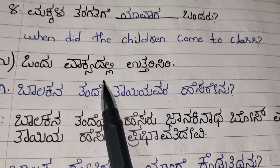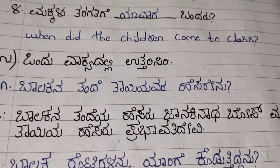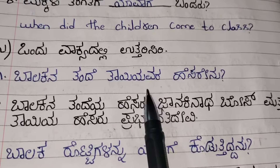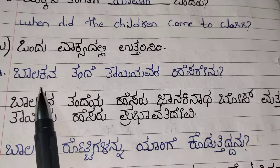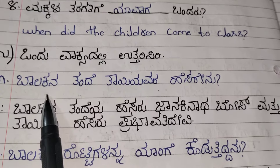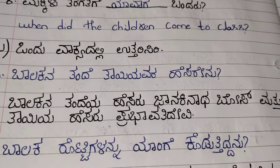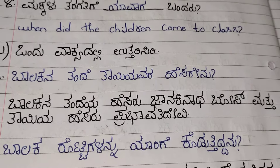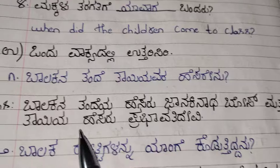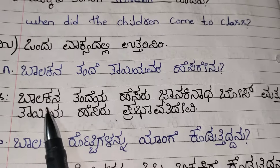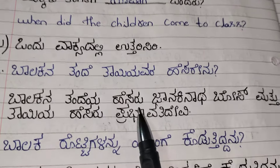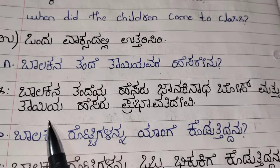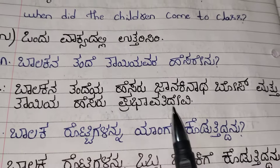Next one: Vandhuvaakya dalli uttarishiri. You need to answer these in one sentence. Balakana tandetai yavara hesarenu — you need to tell the boy's father and mother's name. Father's name was Janakinadbos and mother's name was Prabhavati Devi. The answer is: Balaka na tandeya hesaru Janakinadbos, matduu taeya hesaru Prabhavati Devi.